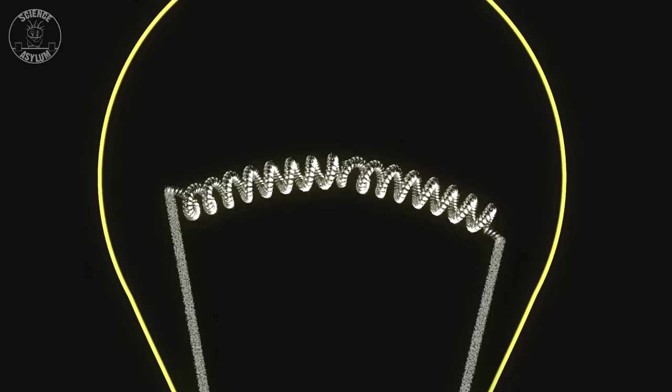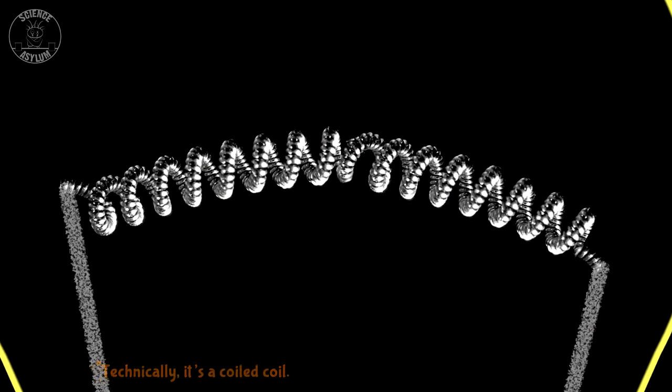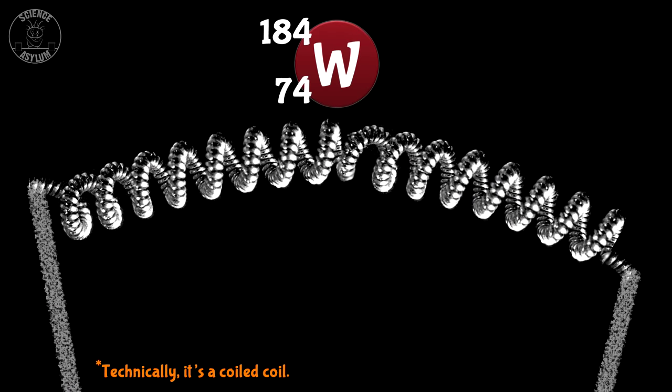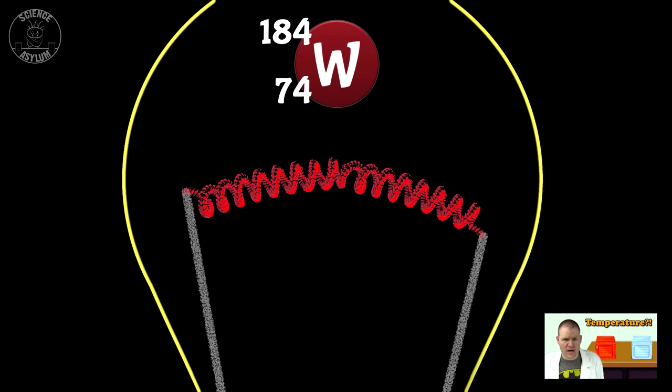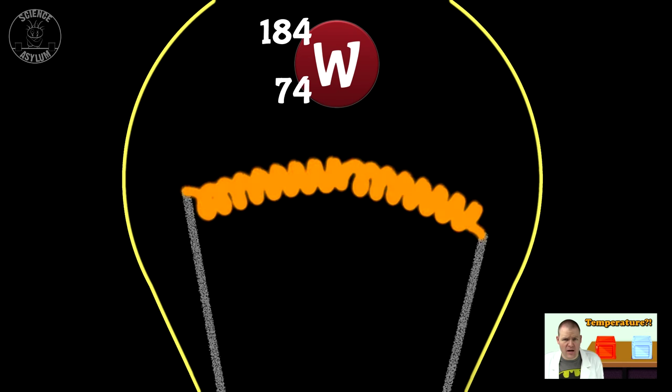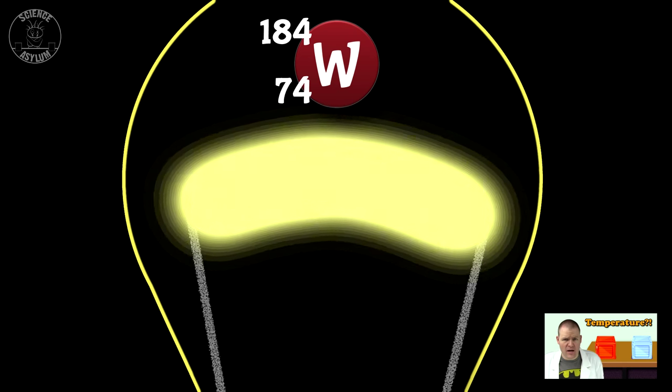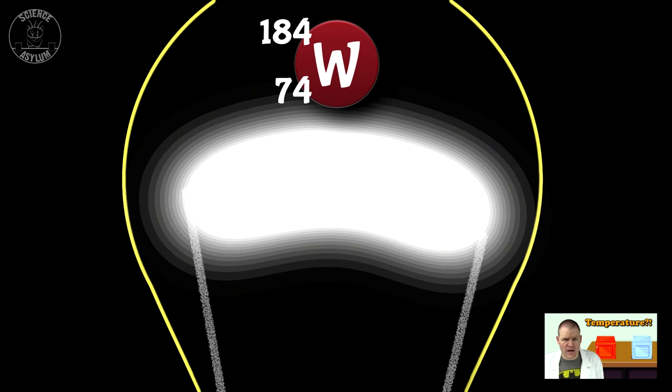Let's take a closer look at that light bulb. Inside the bulb, there's a coiled filament, usually made of tungsten. As it heats up, it starts to glow red, then orange, then yellow, and finally white.